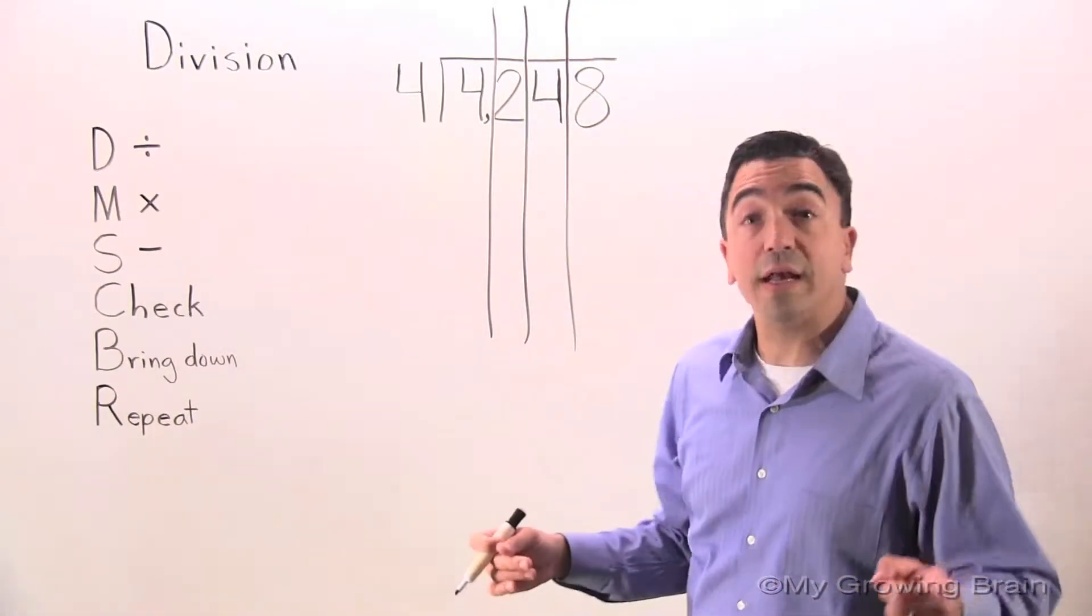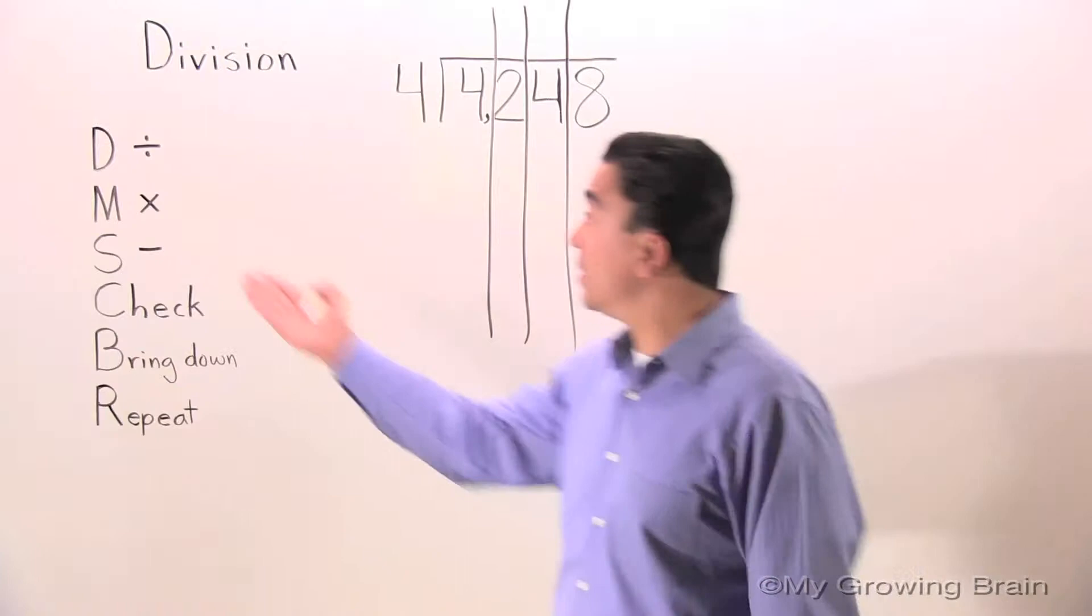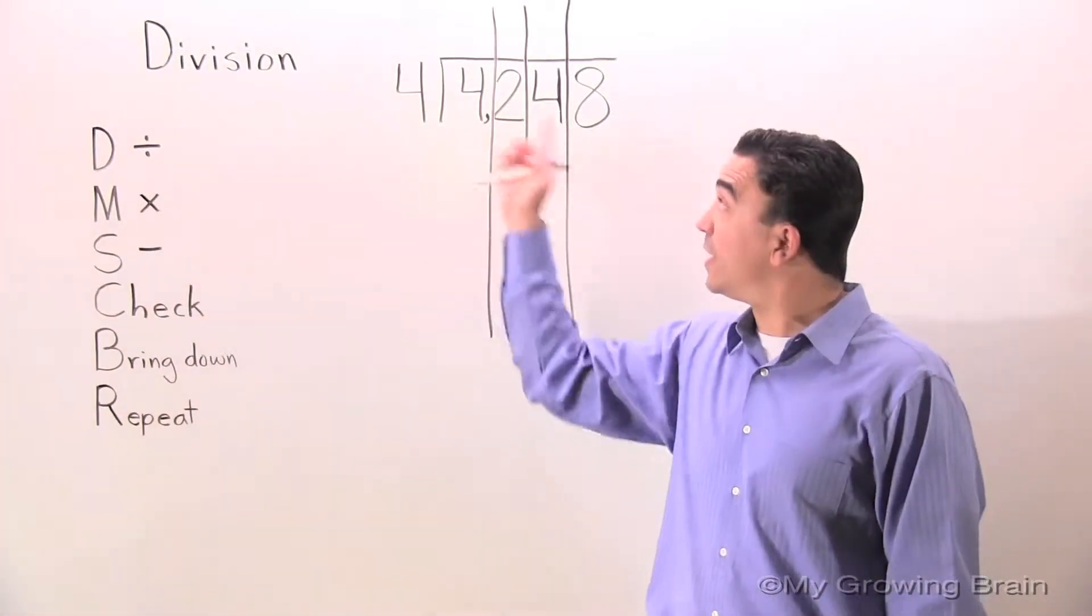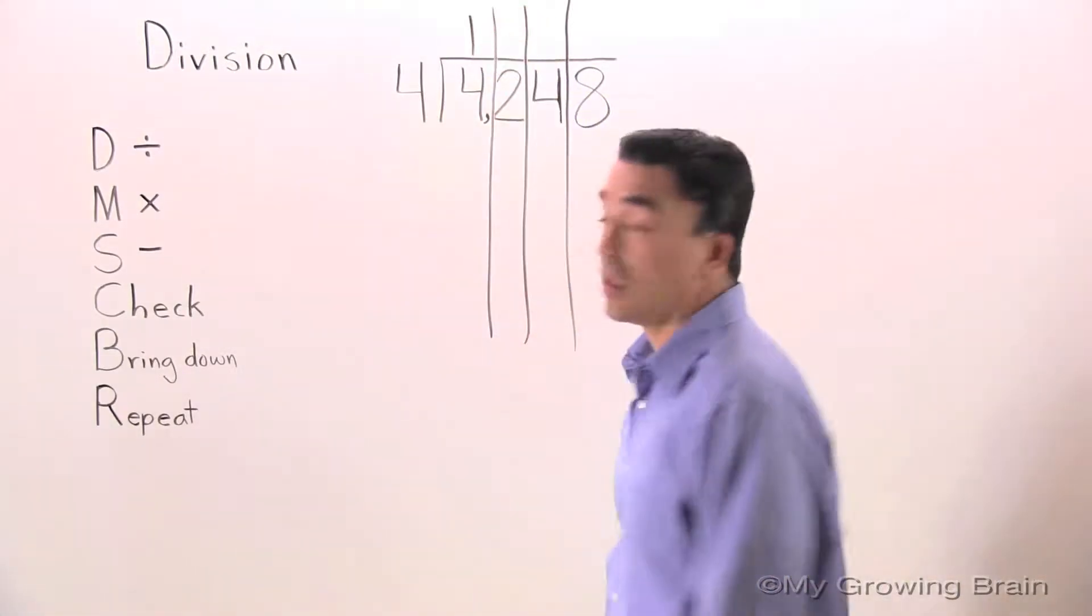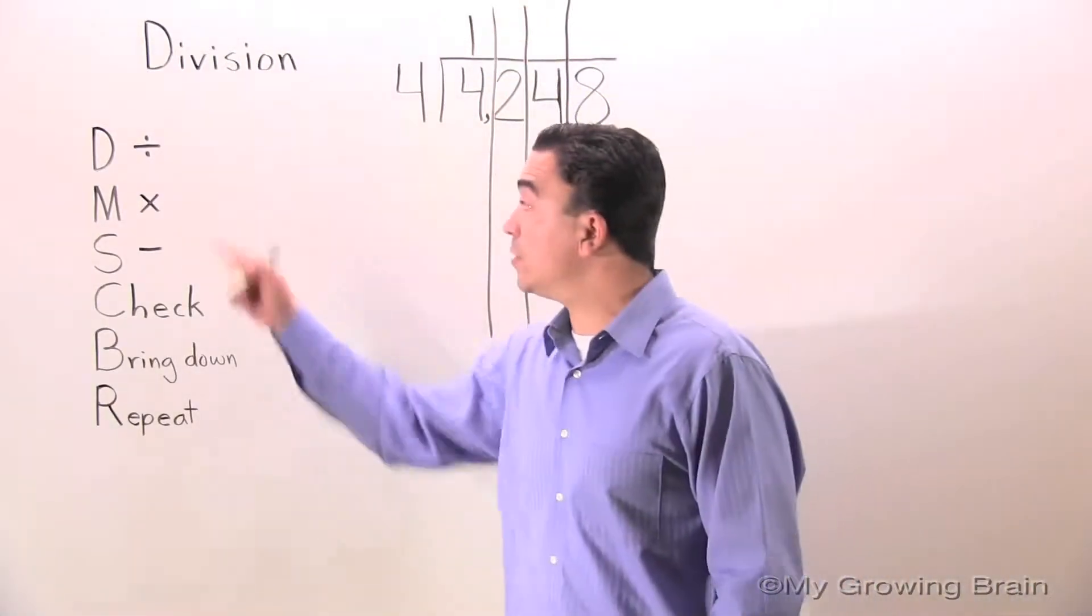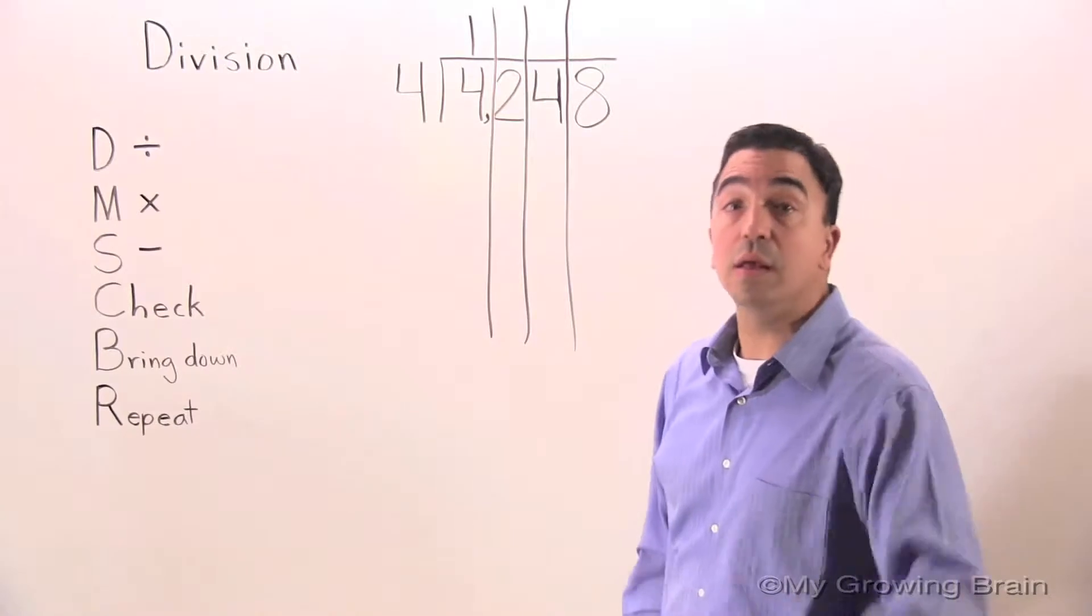All right, we're ready to go. First step: divide. 4 divided by 4, 4 into 4, 1 time. Next step: multiply. 4 times 1 is 4.